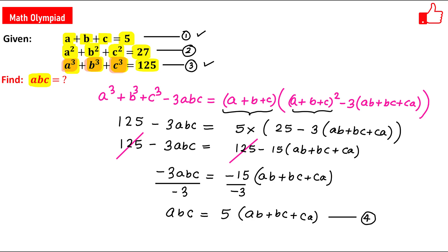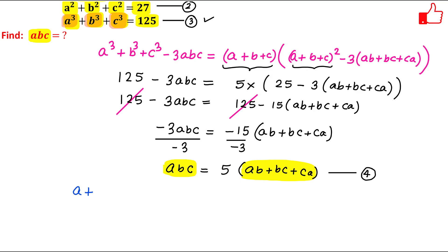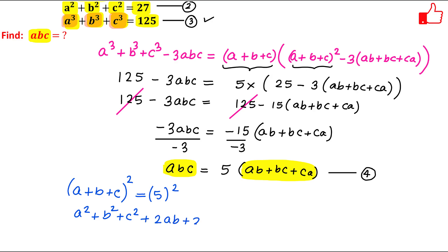Now my target is to find the value of abc, but equation 4 contains (ab plus bc plus ca). This gives me a hint — why not square equation 1? So let us take equation 1 and square it. Squaring (a plus b plus c) equals 5 gives: a squared plus b squared plus c squared plus 2(ab plus bc plus ca) equals 25.